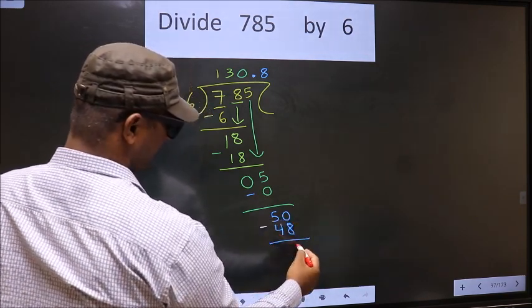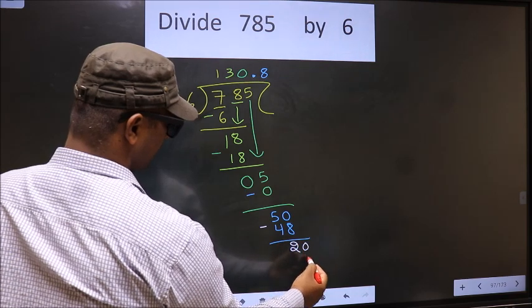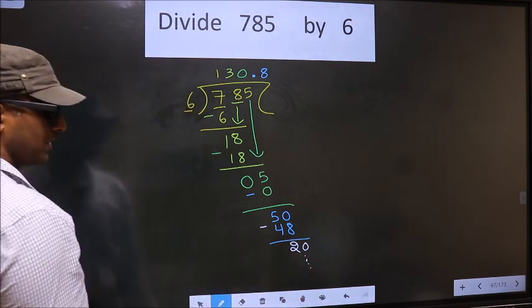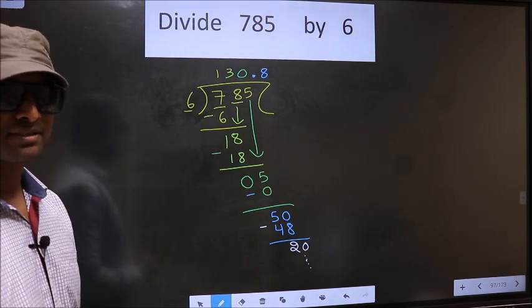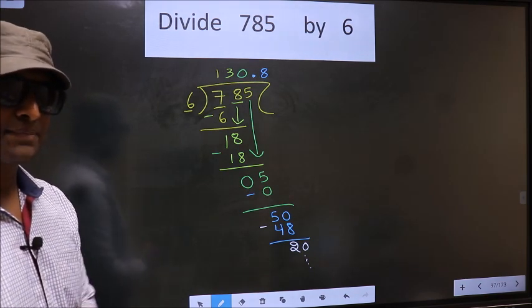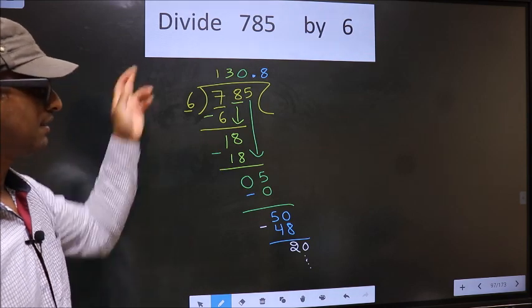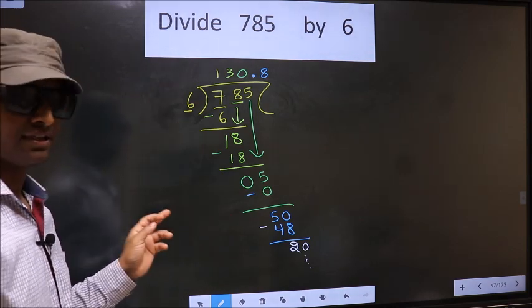Now you subtract. You get 2, take 0, continue the division. I am not doing that. Did you understand where mistake happens? You should not do that mistake. Am I clear?